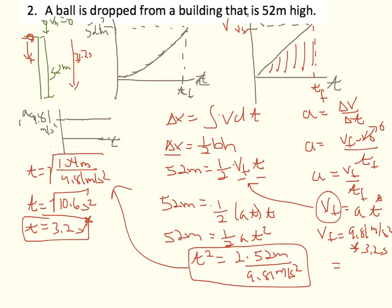Now I can find the final velocity: vf = 9.81 m/s² × 3.2 s = 31.39 meters per second. We're done with this problem — we know the initial velocity, final velocity, initial position, final position, and the time it took for everything to happen.